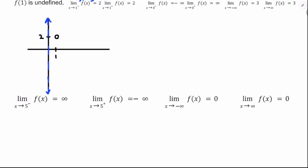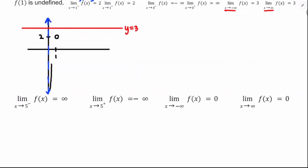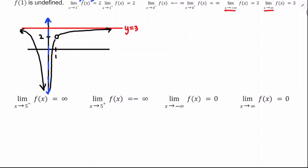As x approaches positive or negative infinity, f approaches 3, so I draw a horizontal asymptote at y equals 3. Then I draw the simplest graph respecting the vertical asymptote and the hole. My end behavior approaches y equals 3 on both ends. It's possible to have both branches going the same direction around a vertical asymptote. That's a decent sketch.